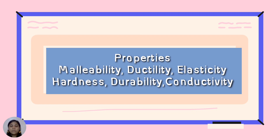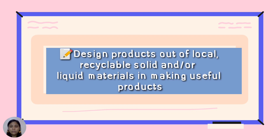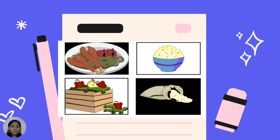This will help you recognize the importance of recycle, reduce, reuse, recover, and repair in waste management. These skills will enable you to design products out of local recyclable solid and/or liquid materials. Let us start by looking at the pictures of waste materials found in the kitchen and at home. Can you recognize the process by which you can help save the environment through waste management?